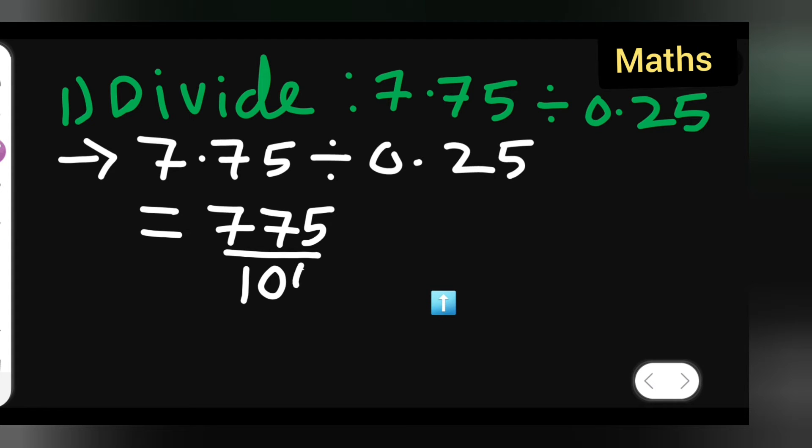Divide by the same way: 25 upon, again it is going to be 100, because which place? One, two, so obviously two zeros will come, right?